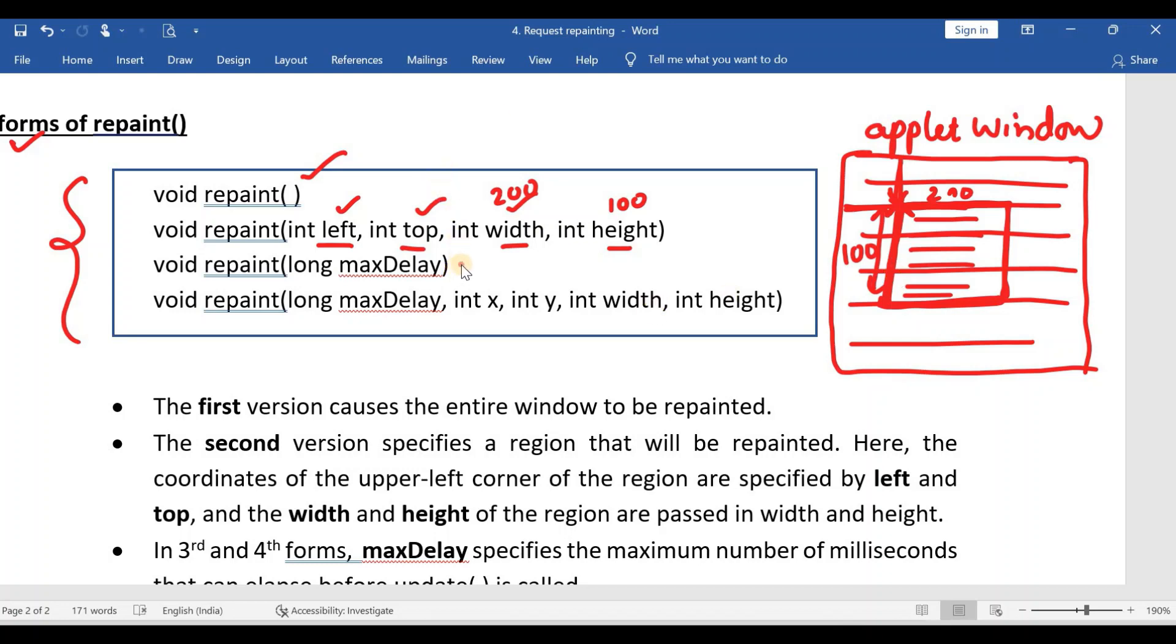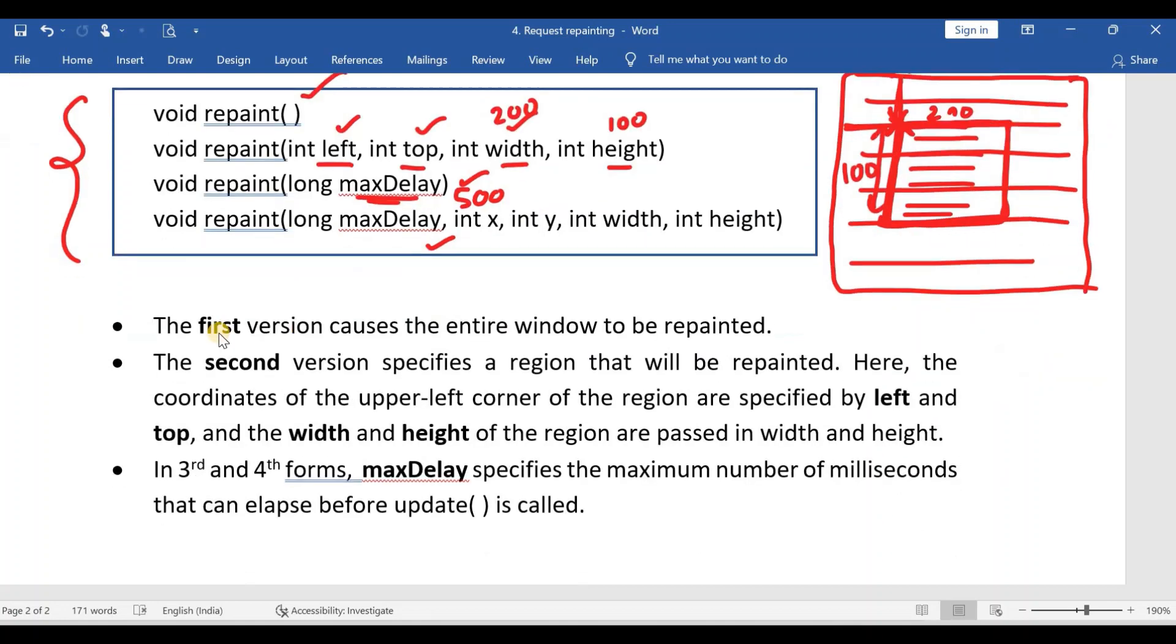And if you see the third form and fourth forms, there we are going to have a maximum delay. Suppose if you give the maximum delay value as 500 milliseconds, so after 500 milliseconds, the update method will not be called. So you can go through all these points. Once again, I have discussed all these points here in this diagram.